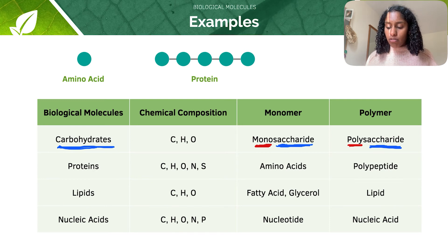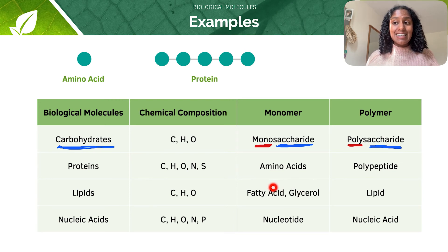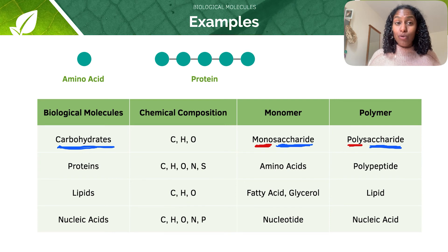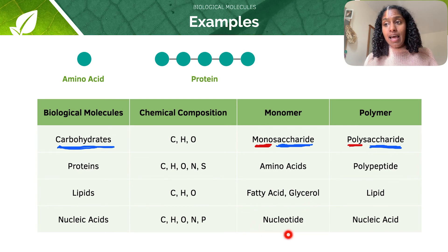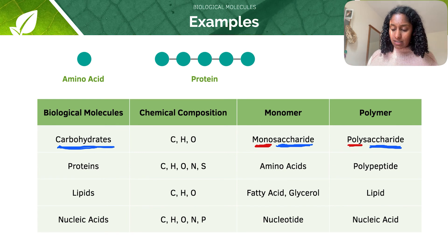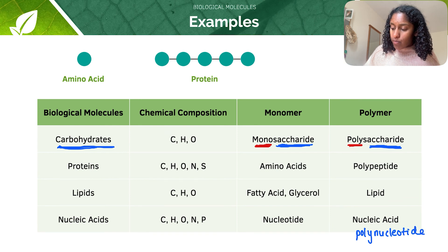For lipids, the monomer groups are fatty acids and glycerol — note this is a bit different, as we have two monomers rather than one. One glycerol joins to three fatty acids to make one lipid, which we'll look at in more detail in a later tutorial. For nucleic acids, formed from carbon, hydrogen, oxygen, nitrogen, and phosphorus atoms, the monomer is a nucleotide, and many nucleotides join together to form a polynucleotide — also called a nucleic acid — in the same way polypeptides are called proteins.